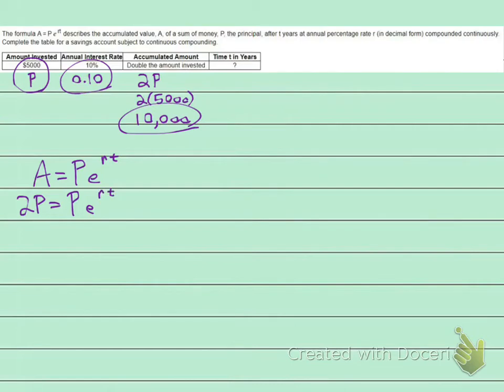We're just going to go and plug in. P is 5,000, and we already did this: 2 times 5,000. So the accumulated value, 2 times the principal is 10,000 equals 5,000 times E to the 0.10 T.